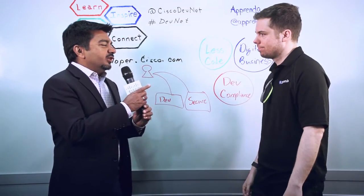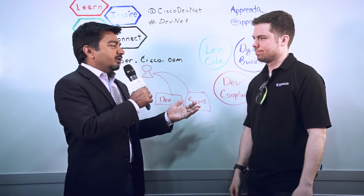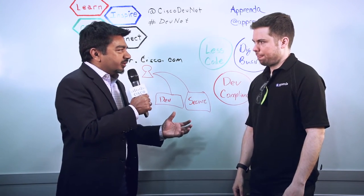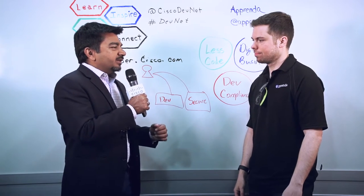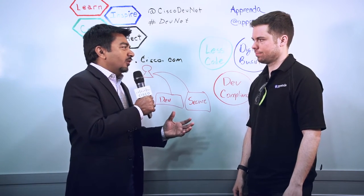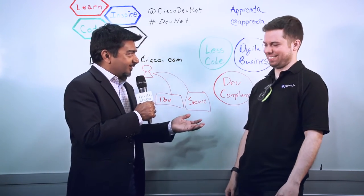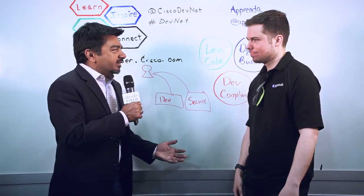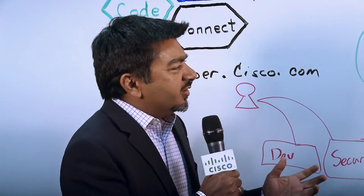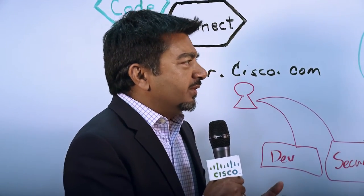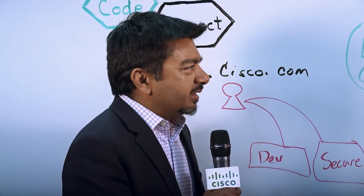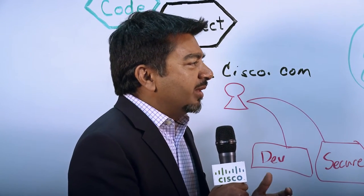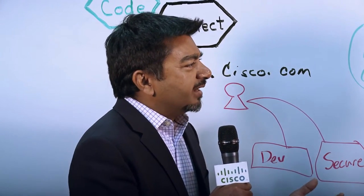So all this has to be baked into the platform to truly automate this container world we're all going to live in one or two years down the line. That was a very good explanation. I heard a couple of things: containers provide resource isolation and security, and Apprenda has been using containers before containers were famous. Now, imagine a financial institute — they obviously have thousands of developers writing thousands of applications. How would a platform-as-a-service environment from Apprenda help that financial institute?